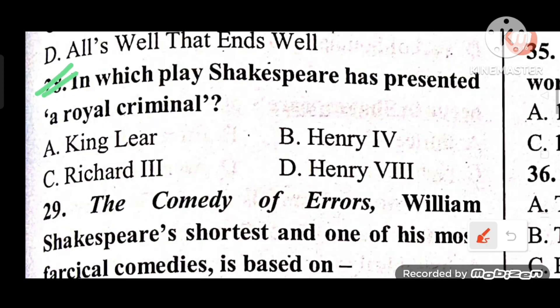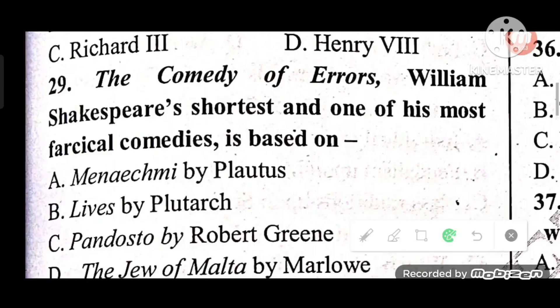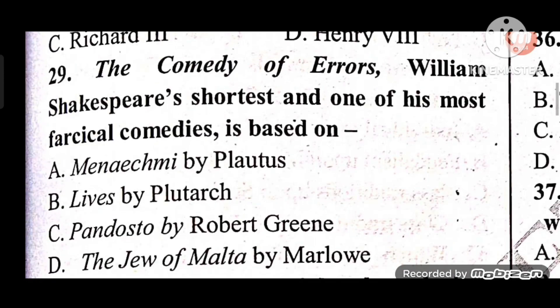Question 28: In which play has Shakespeare presented a royal criminal? Options: King Lear, Henry IV, Richard III, Henry VIII. The answer is C — Richard III.